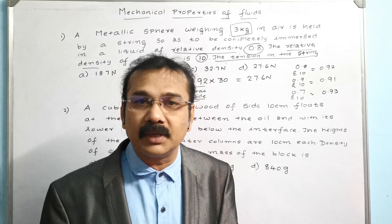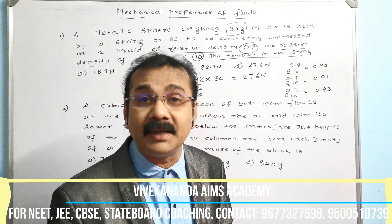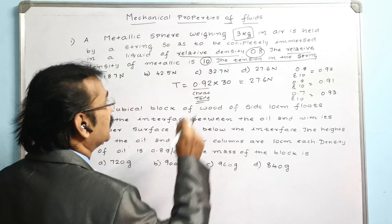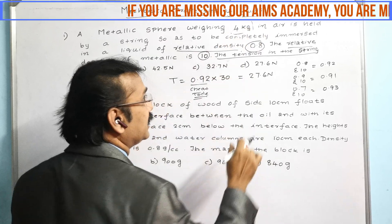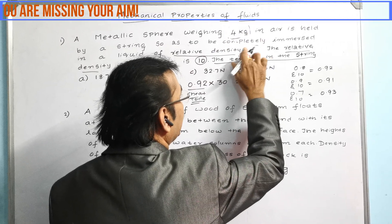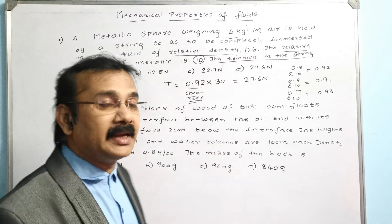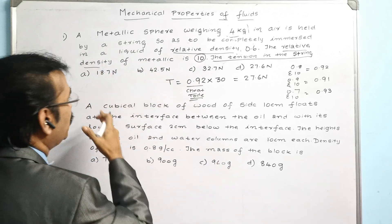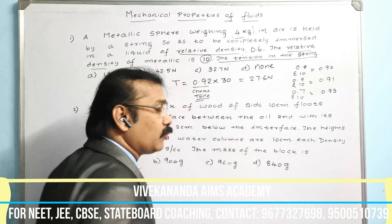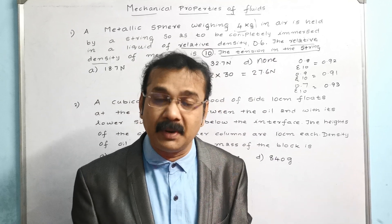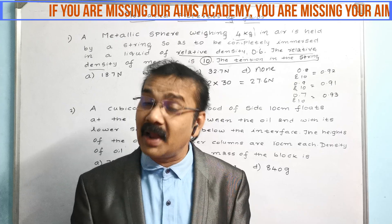Now here is one more practice problem in the same model for you to try. The question is modified: the mass is changed to 4 kg, and the liquid relative density is changed to 0.6, with metallic relative density still 10. Find the tension in the string and post your answer in the YouTube comment area. One of the options given is 'none.'